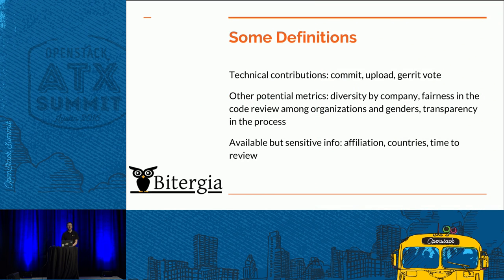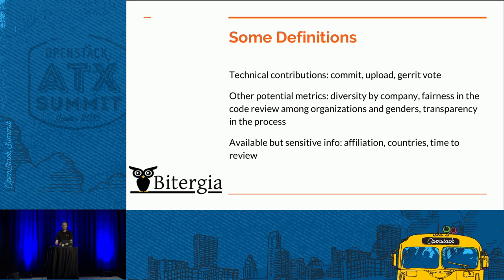What is a technical contribution? We are talking about commits, uploads, and code review votes. A commit is the basic piece of information that any developer produces in the community. This commit needs to be previously uploaded, which is another technical contribution. You may have several review iterations with people saying maybe you have to improve this. This initial analysis is based on these three basic concepts: commits, uploads, and reviews. But we may go for any other metrics, such as diversity by company, firmness in the code review process, or code review between different organizations. We are talking about transparency — if there are some not-so-good points, we can improve them, but we need the data.